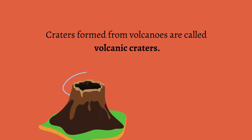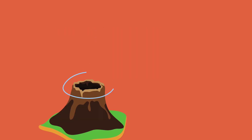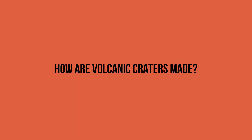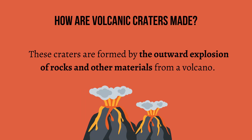Craters formed from volcanoes are called volcanic craters. So do you know how volcanic craters are made? These craters are formed by the outward explosion of rocks and other materials from a volcano.